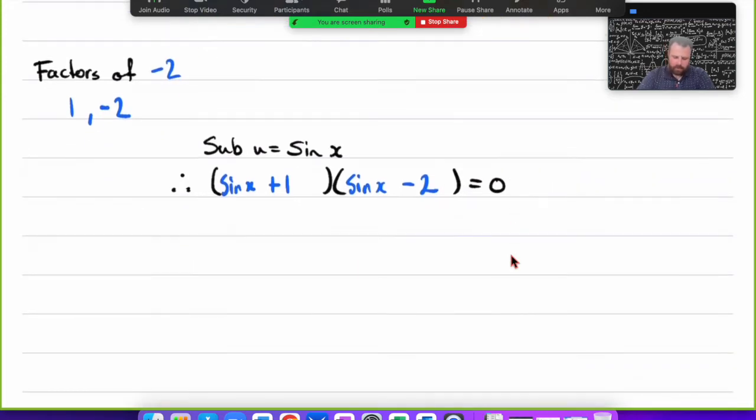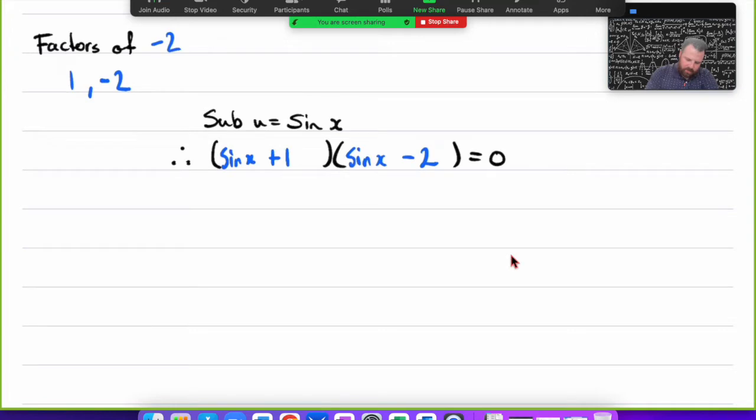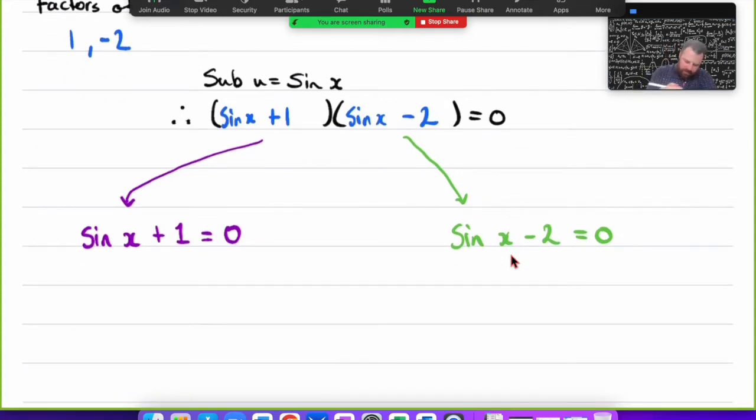Instead of writing u + 1 and u - 2, I'm just going to replace that with sin x. So I know that (sin x + 1)(sin x - 2) = 0. When solving this equation, our solution is when sin x + 1 = 0 or when sin x - 2 = 0.